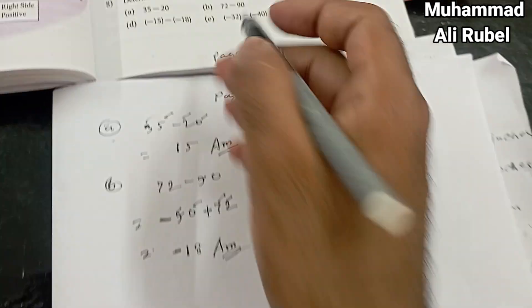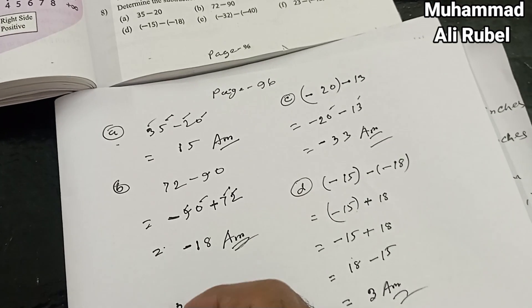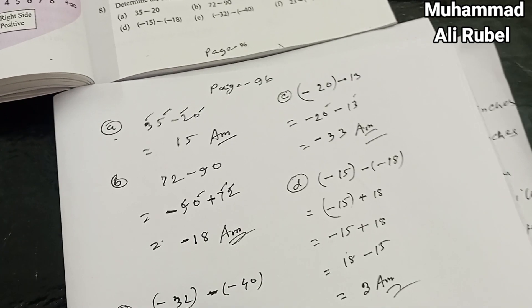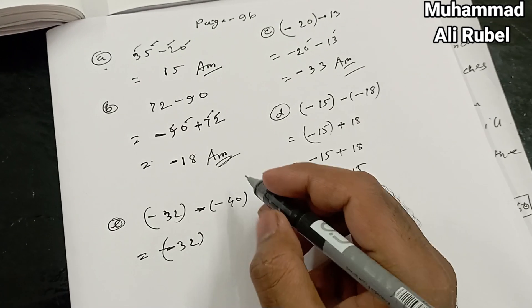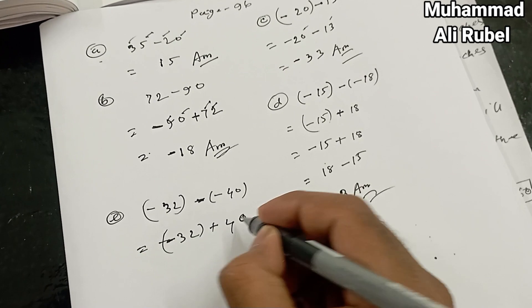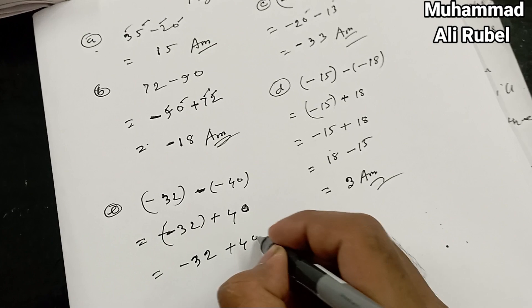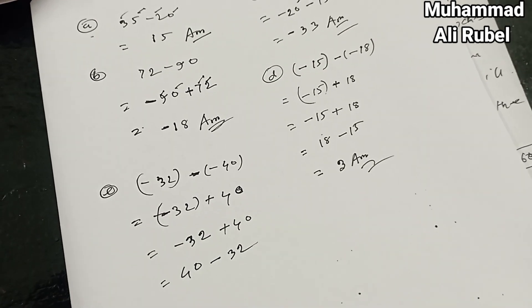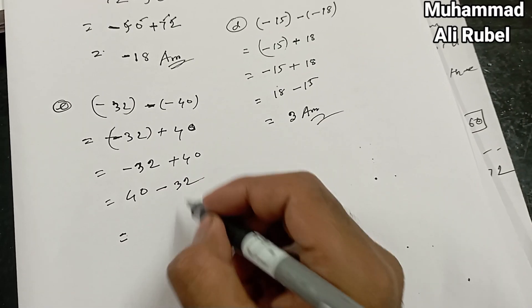After that we're going to solve number (e). E is minus 32 minus 40. It's so easy. 32, we solve it first: minus times minus is plus 40. 40 is the greater number, that's why we write it first, then 32. Now we subtract 40 minus 32.